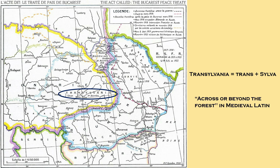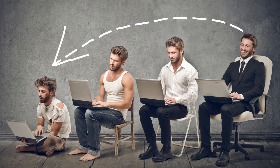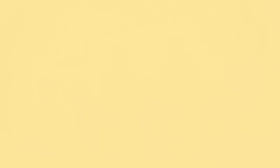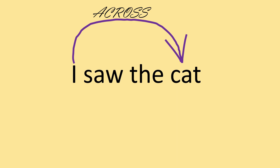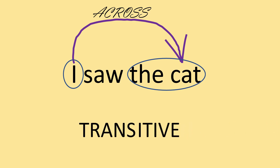You see this as well on the map of Romania — there's a region called Transylvania, which literally means 'across or beyond the forests' in medieval Latin. And 'trans' also appears in words like 'transition' — if you're changing from one stage in life to another, you're going across from one status level to another. So, because of this, a sentence where there's a verb in the middle and two objects on either side — like 'I do something to the cat' — is called transitive. That's how you remember it.